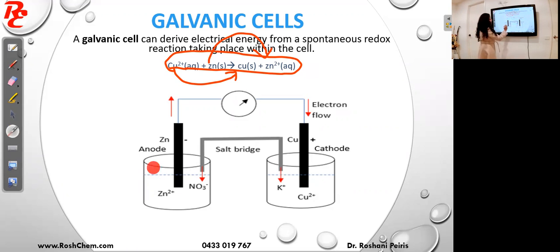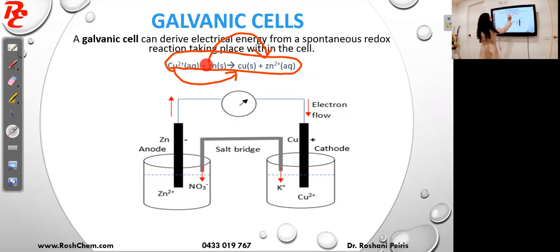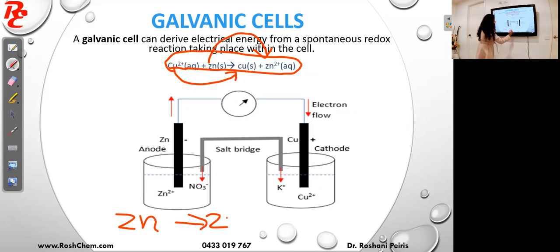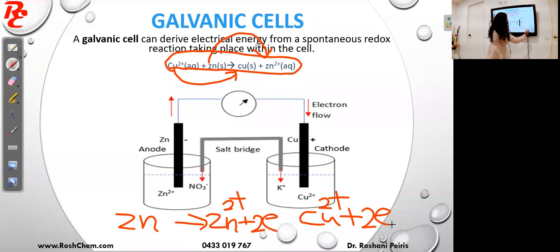To construct the galvanic cell I need two half cells: one side is the zinc 2+/zinc half cell and the other side is the copper 2+/copper half cell. In the zinc half cell, zinc is going to zinc 2+ — electrons are on the right hand side, so that is oxidation. In the other half cell, copper 2+ plus 2e⁻ goes to copper, so that is reduction.